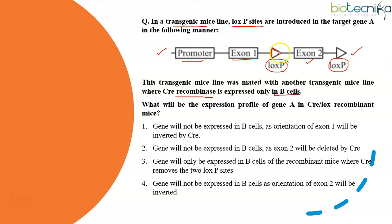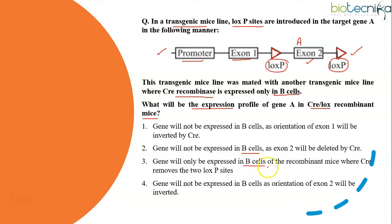The direction and location of LOX-P sites are very important. Here the LOX-P sites are facing in the same direction. This transgenic mice line was mated with another line where CRE recombinase is expressed only in B cells. We have to find the expression profile of gene A in CRE-LOX recombinant mice. Options are: gene not expressed in B cells as exon 1 orientation will be inverted; gene not expressed in B cells as exon 2 will be deleted by CRE; gene only expressed in B cells where CRE removes the two LOX-P sites; or gene not expressed in B cells as orientation of exon 2 will be inverted.